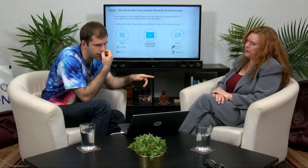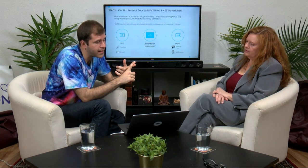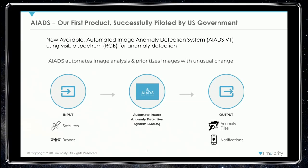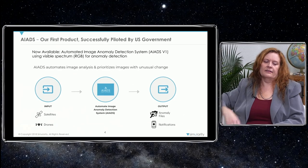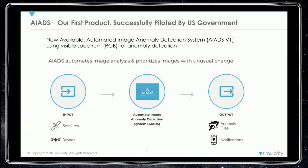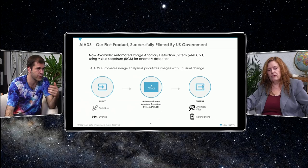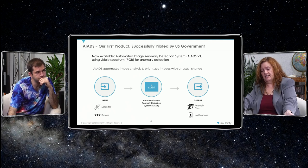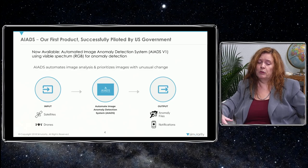We stretch or shrink images so they can stack on top of each other and look for anomalies. The AI-ADS — automated image anomaly detection system — is where we're looking for anomalies in historical context. You take input from satellites or drones, run it through AI-ADS, and on the output you get anomaly files and notifications. The AI in AI-ADS also stands for artificial intelligence — that's where we're building our predictive models.